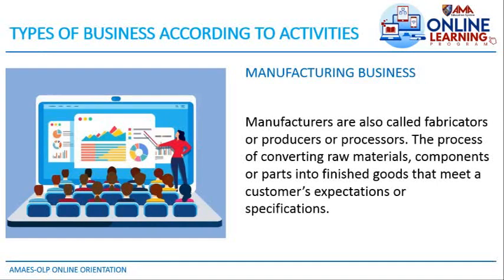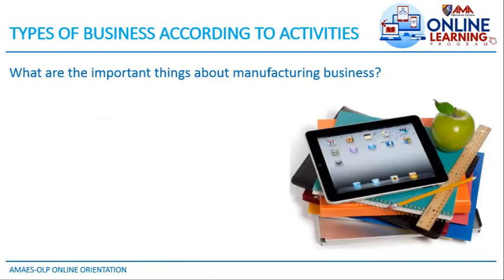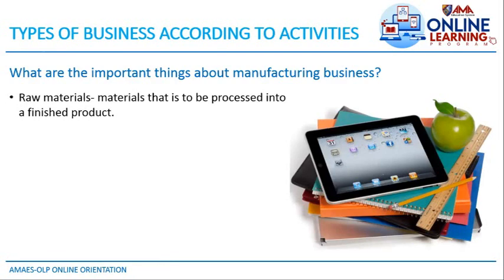The last type of business by activity is the manufacturing business. Manufacturers are also called fabricators, producers, or processors. Manufacturing is the process of converting raw materials, components, or parts into finished goods that meet a customer's expectations or specifications. Raw materials are the materials processed into a finished product — for example, a tree that can be formed into paper, furniture, drawers, beds, and more.